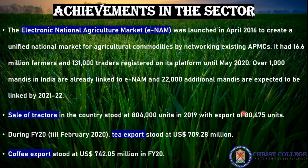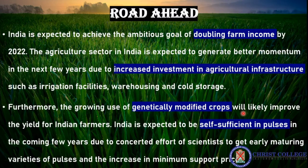Some achievements of this sector include the Electronic National Agricultural Market, eNAM, launched in 2016 to create a unified market for agricultural commodities. Sale of tractors is increasing, and in the export sector, tea and coffee exports are also increasing. One of the main goals going forward is to double farmers' income by 2022.